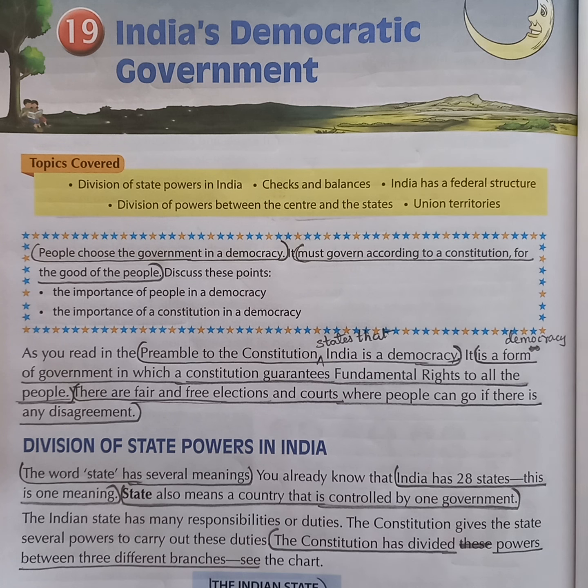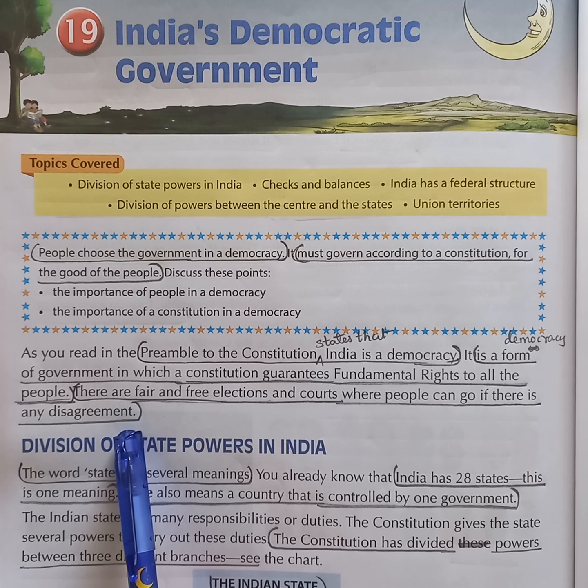Next question: what are the features of democratic government? Answer: democracy is a form of government in which a constitution guarantees fundamental rights to all the people. There are fair and free elections and courts where people can go if there is any disagreement in democracy.